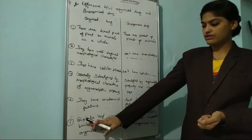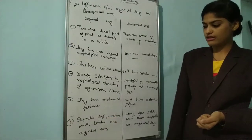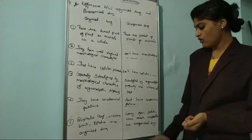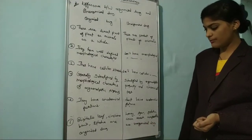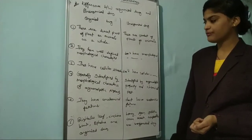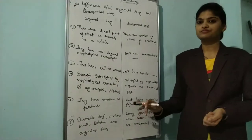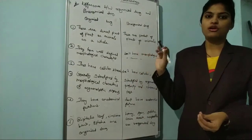Sixth point is examples. Examples of organized drugs: digitalis leaf, senna pod, ephedra. Examples of unorganized drugs: honey, agar, gelatin, gum acacia. So this is the difference between organized and unorganized drugs.